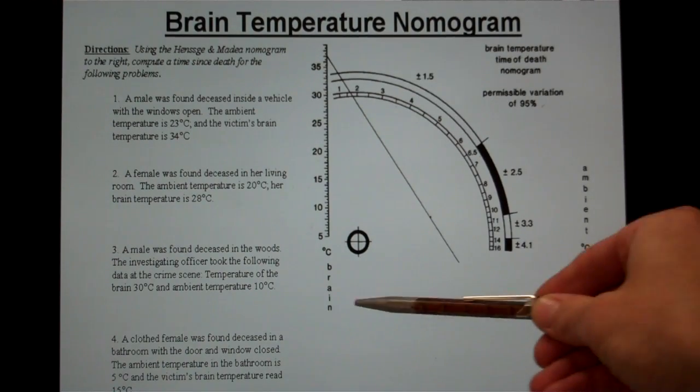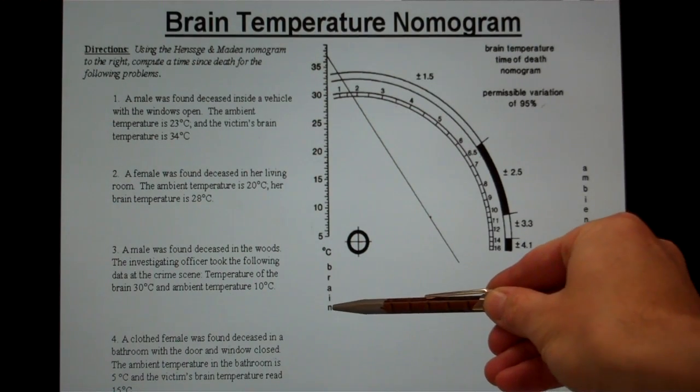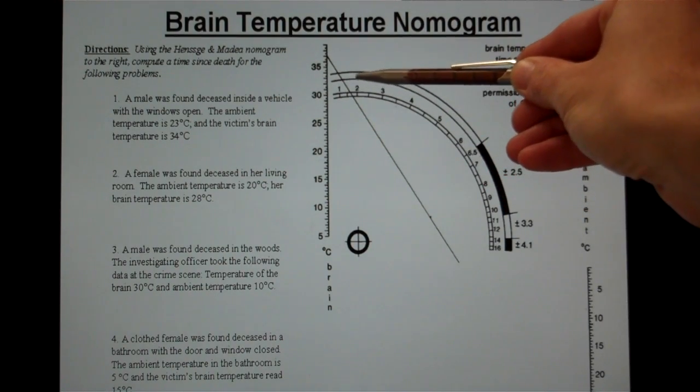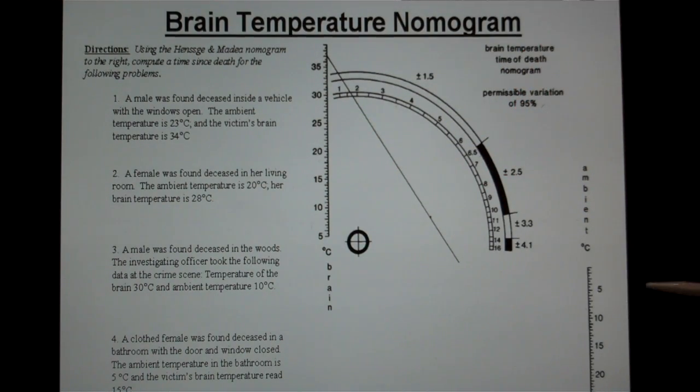So again, I'm going to have to come over here along this axis for brain temperature and make a mark at 34 degrees centigrade. And then for the ambient temperature, I'm going to come down here and make a mark at 23. Once I've done that, I'm going to use a ruler or a straight edge and connect those two points. And in this example, I'm going to use a blue line.